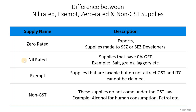Nil rated supply means zero percent GST. The supplies that have zero percent GST — this is different from zero rated. The examples are salt, grains, jaggery etc. One important thing about nil rated tax is you can claim the ITC, the input tax credit, which is very essential for any businessman.